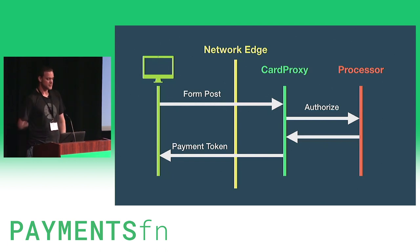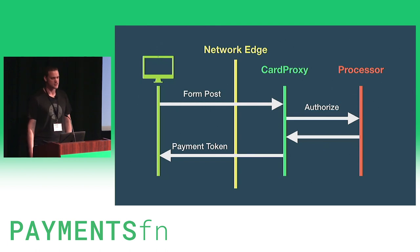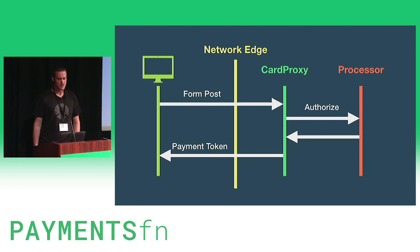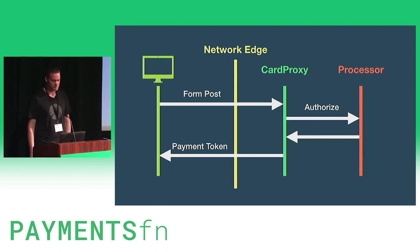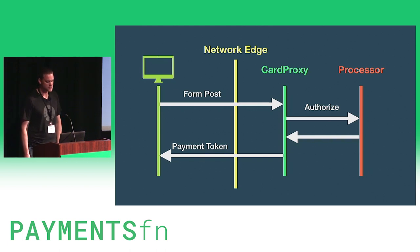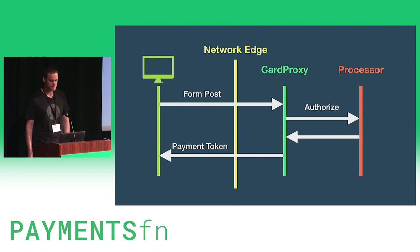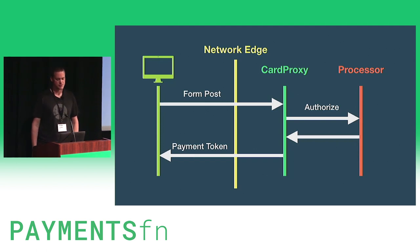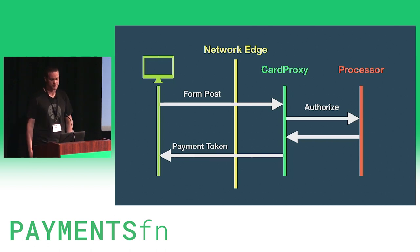First, the user's browser posts a credit card form directly to CardProxy over HTTPS. CardProxy then interacts with the processor to authorize or purchase the payment. Next, CardProxy responds with a redirect to Shopify with a payment token. And now the Shopify server can use that token to do additional operations on the payment through CardProxy, such as voiding or refunds.